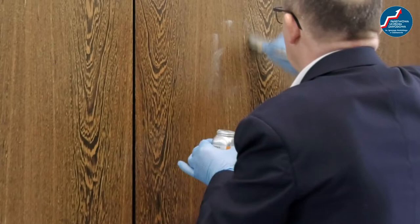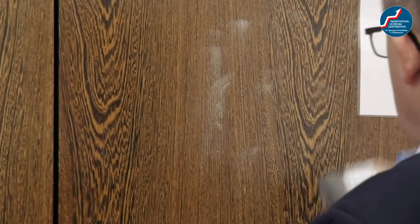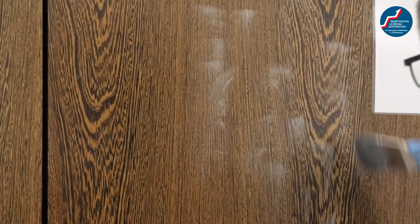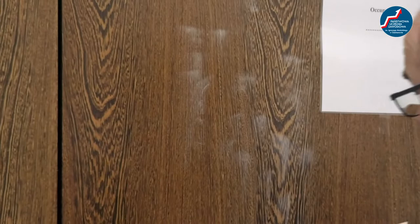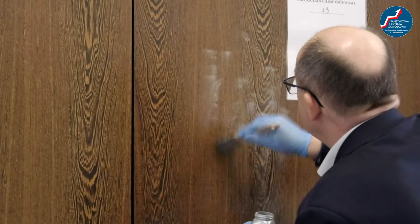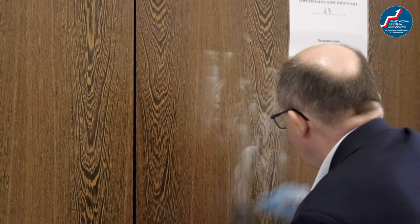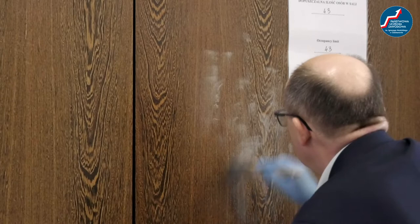Coś się pojawia. Delikatnie nanosimy warstwę, żeby warstwa tego proszku przykleiła się do substancji potowo-tłuszczowej, która pozostała, jeżeli sprawca dotykał swoimi dłońmi tych drzwi. Widzimy tutaj ślad. Możemy go doświetlić dokładnie, żeby był bardziej wyrazisty. Widzimy tutaj opuszki palców.